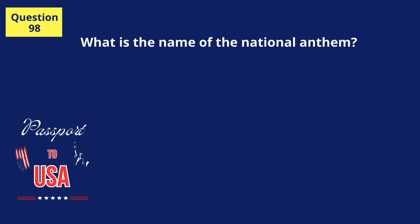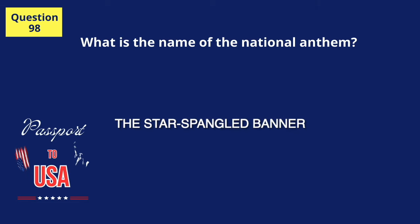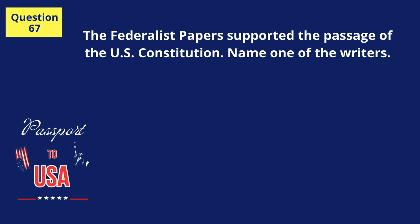What is the name of the national anthem? The Star-Spangled Banner. The Federalist Papers supported the passage of the U.S. Constitution. Name one of the writers. James Madison.